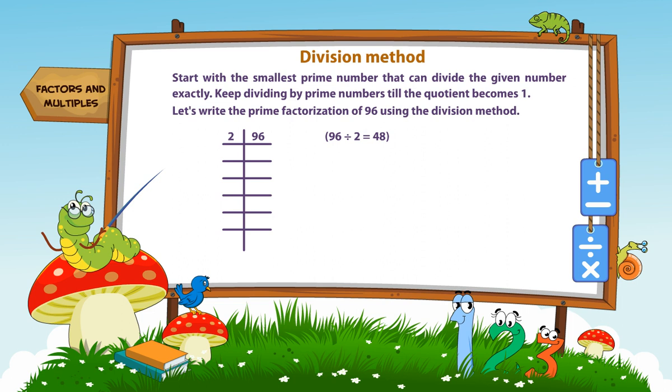96 divided by 2 is equal to 48. 48 divided by 2 is equal to 24. 24 divided by 2 is equal to 12. 12 divided by 2 is equal to 6. 6 divided by 2 is equal to 3. 3 divided by 3 is equal to 1.